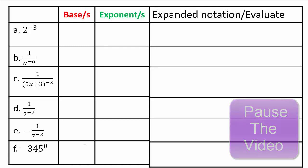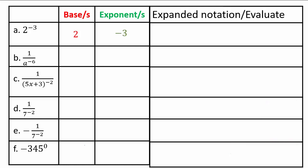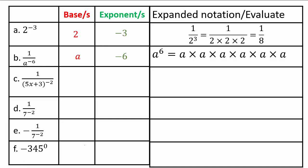Assuming you've come back from pausing: base is 2, exponent is negative 3, which means it becomes 1 over — so it'll be 1 over 2 to the 3rd, and 2 times 2 times 2 equals 8, so it's 1 over 8. Here, base is a, exponent is negative 6 — it's a negative exponent in the denominator, so it changes to the numerator: a to the 6, which is a times a times a, 6 times.